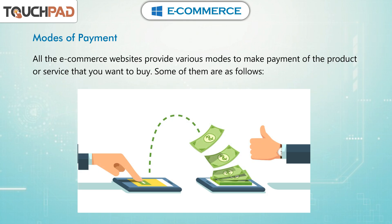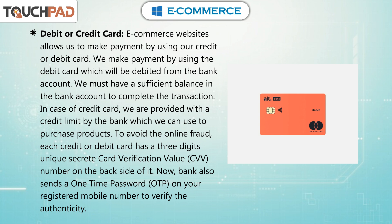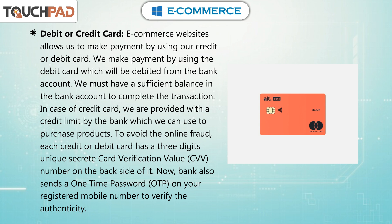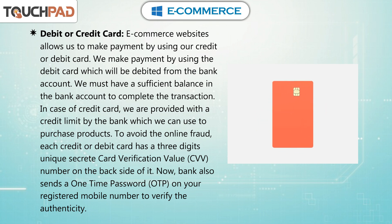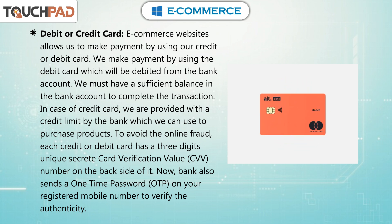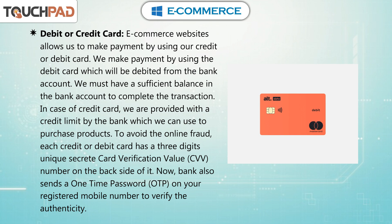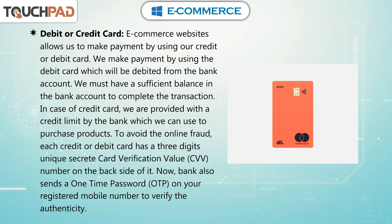Modes of payment. All the e-commerce websites provide various modes to make payment for the product or service that you want to buy. Some of them are as follows. Debit or credit card: e-commerce websites allow us to make payment by using our credit or debit card. Payment by debit card will be debited from the bank account, and we must have a sufficient balance to complete the transaction. In case of a credit card, we are provided with a credit limit by the bank. To avoid online fraud, each credit or debit card has a three-digit unique secret Card Verification Value (CVV) number on the back side. The bank also sends a one-time password (OTP) to your registered mobile number to verify the authenticity.